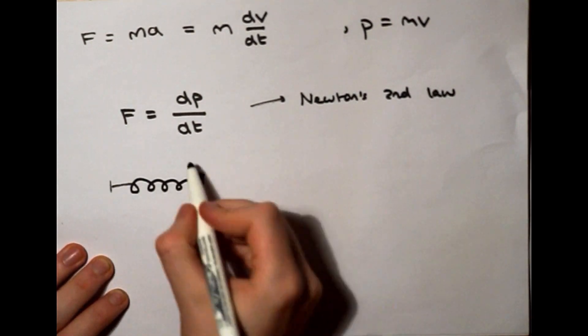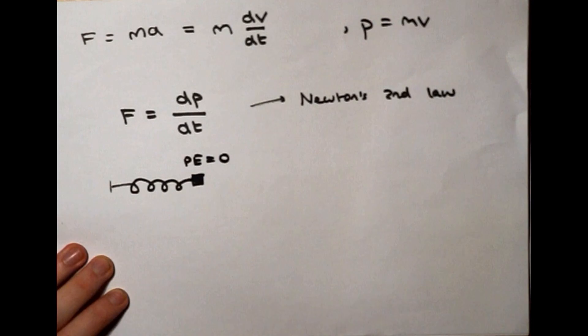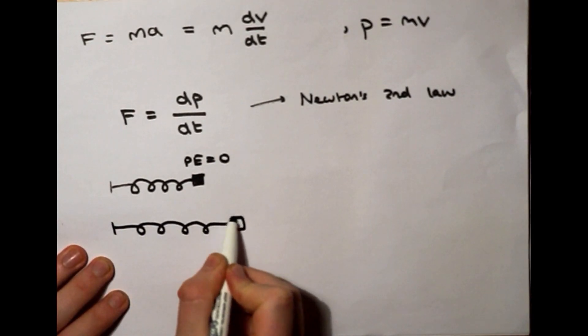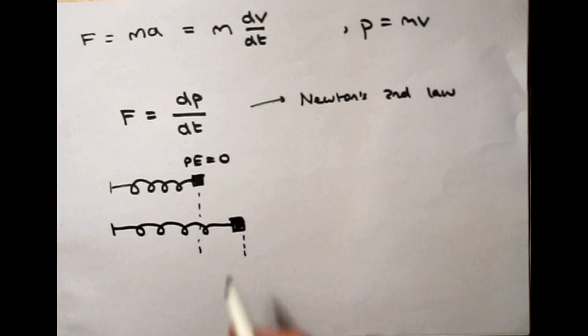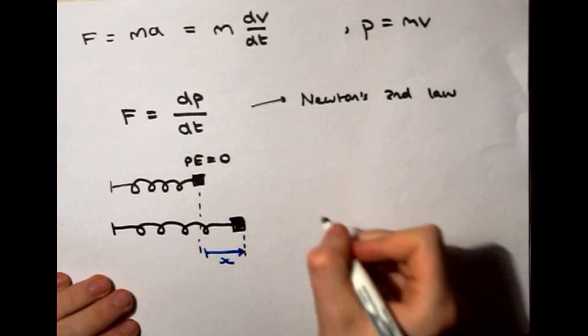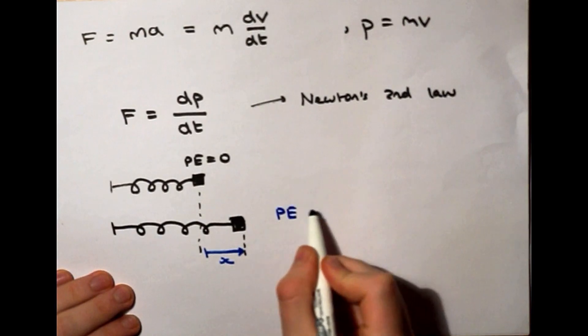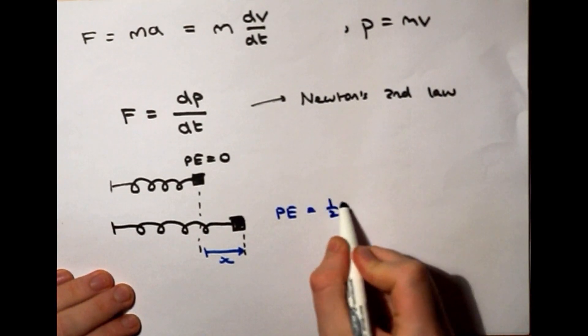I think this is best illustrated using the familiar example of a mass on a spring or an object falling from a height. If we extend the spring by a distance x, then its potential energy is equal to half times the spring constant times its extension squared.